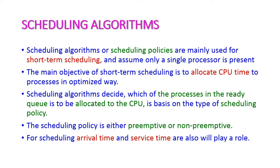First, let us see what is a scheduling algorithm — that is the CPU scheduling algorithm. The scheduling algorithms, otherwise called scheduling policies, are mainly used for short-term scheduling. The algorithm is for CPU scheduling and assumes only a single processor is present.